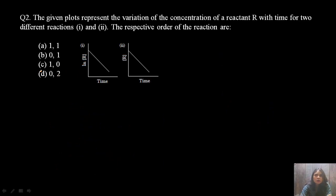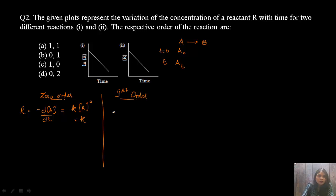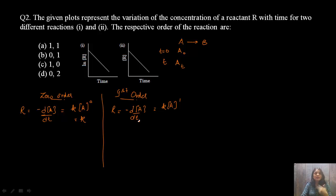Moving to the next question: we have a plot of concentration of reactant versus time and we have to identify which order of reaction these plots represent. For a reaction A → B, at t = 0 concentration is A₀ and at time t it is Aₜ. For zero order: rate = −d[A]/dt = K·[A]⁰ = K. For first order: rate = −d[A]/dt = K[A]^1. Now integrating these rate laws gives us the integrated rate laws.